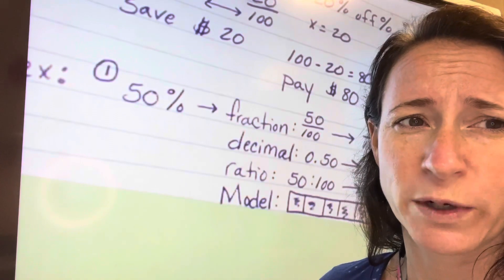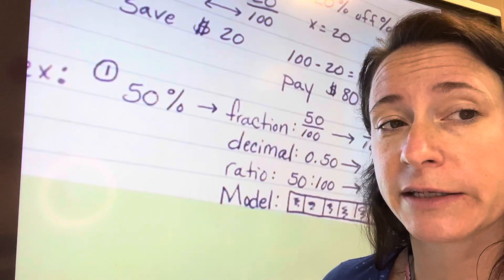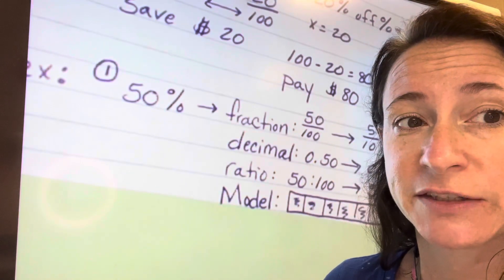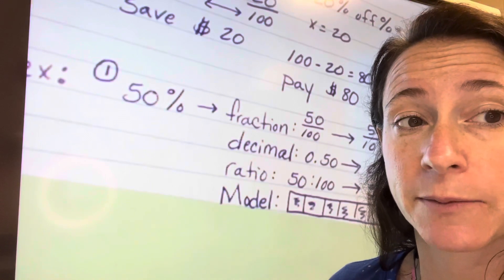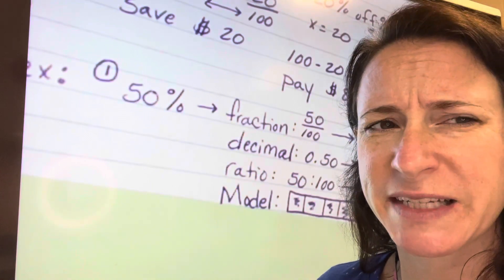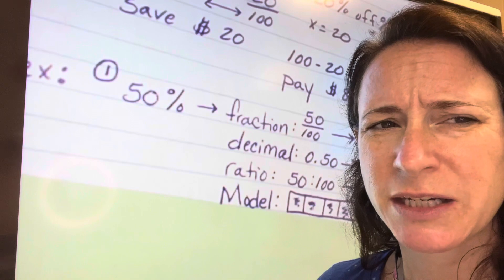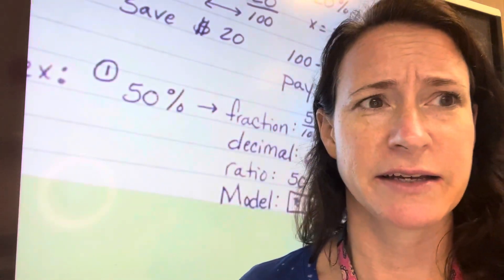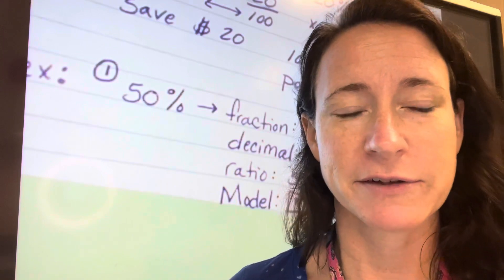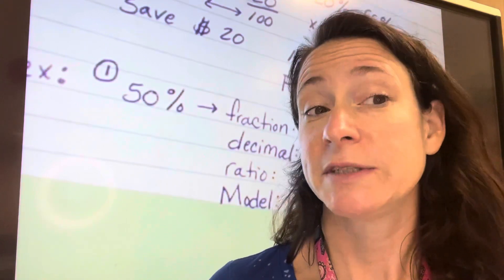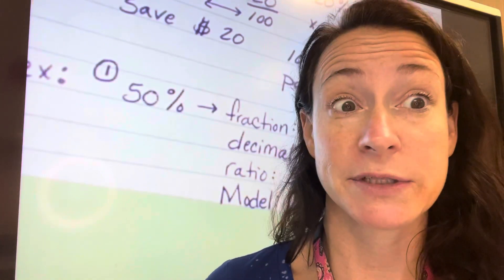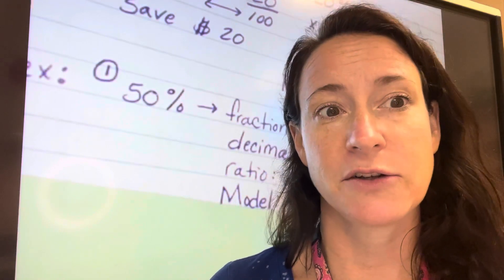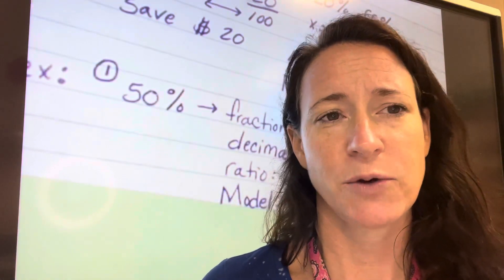But typically when we're dealing with percents, when you're in the store seeing sales and things, you don't see like 27% off. It's usually 20%, 30%, 50%, 35%. So they're usually within numbers and that way you can simplify.